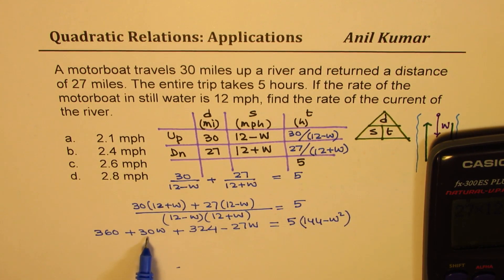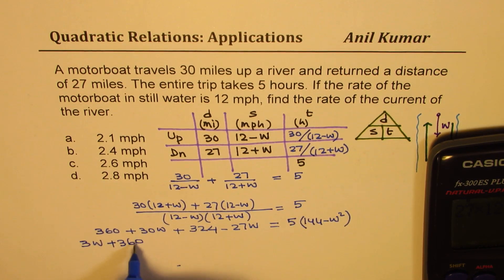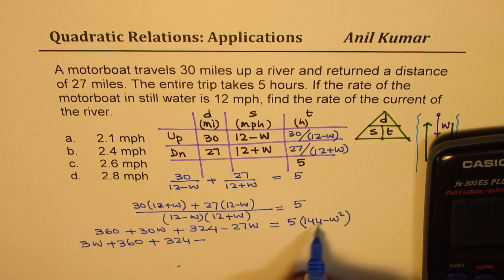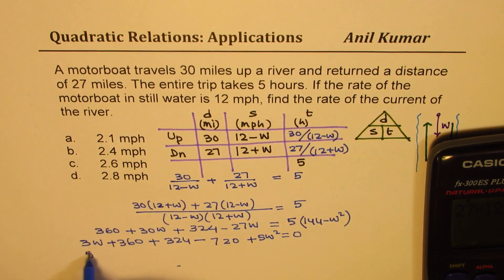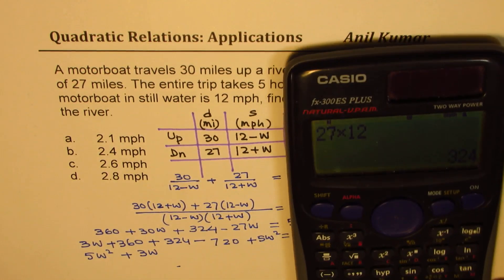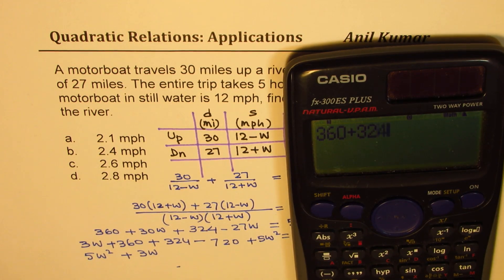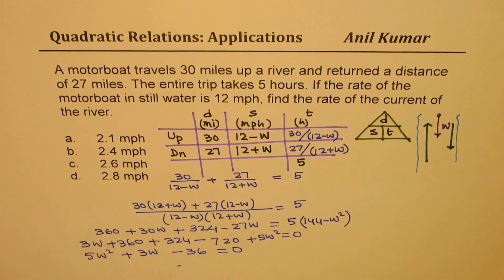Now we can bring all the terms together. So what do we have? As far as the w is concerned, 30 minus 27 is 3w, so we can write this as 3w. So let's write down this number as 360 plus 324. We'll bring this term here, 5 times 4 is 22, and then 2 is 720, and that minus becomes plus 5w squared equals to 0. So that gives you 5w squared plus 3w, and let's do this. So we have 360 plus 324, and we'll take away 720 minus 36 equals to 0. So that is what we get.